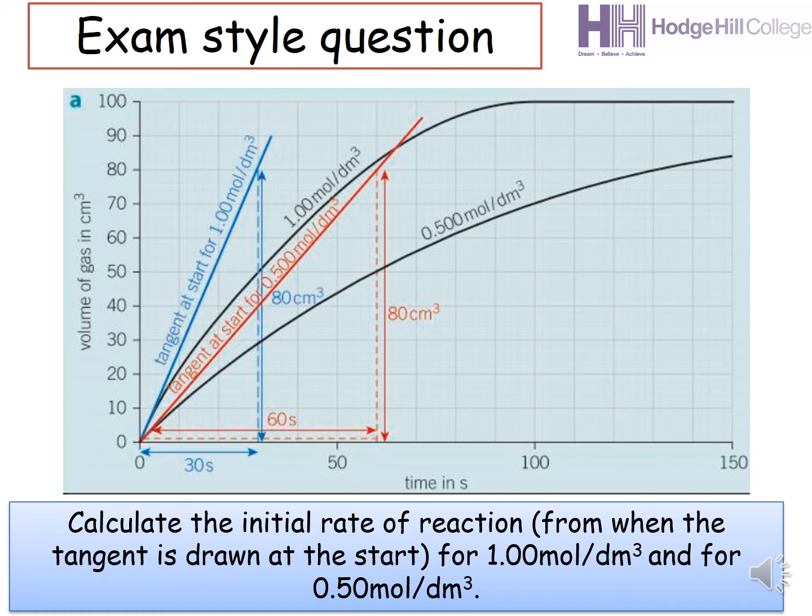Now, we have two reactions represented here on this graph. The first one is for a solution of concentration 1.00 mole per dm cube. Now, if you look carefully on this graph, the tangent is already drawn for you and arrows to show the change in y and the change in x.